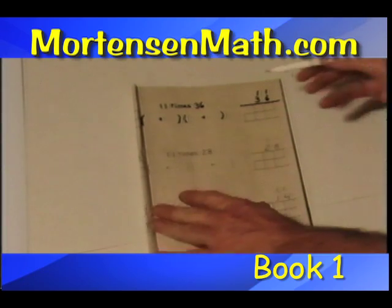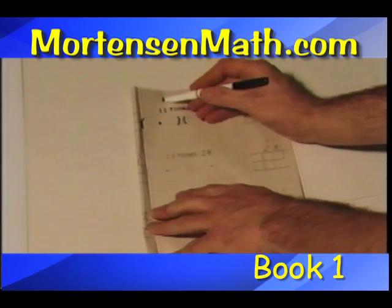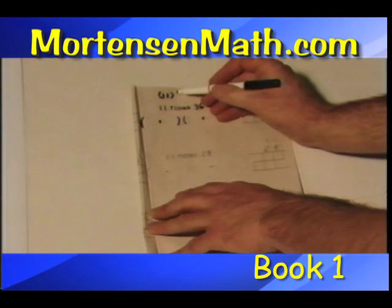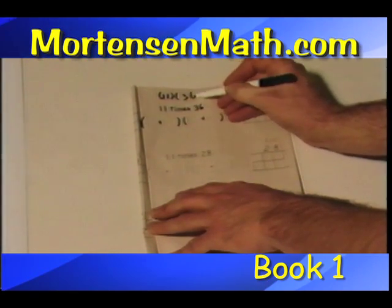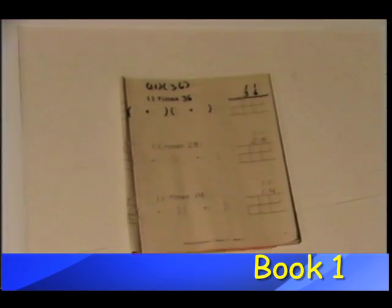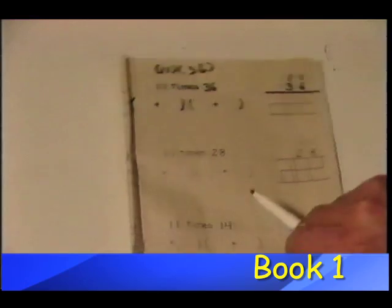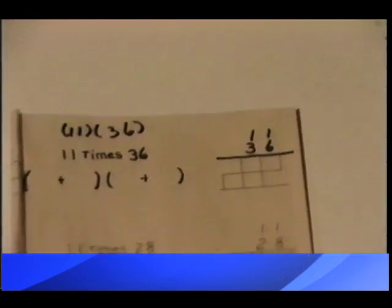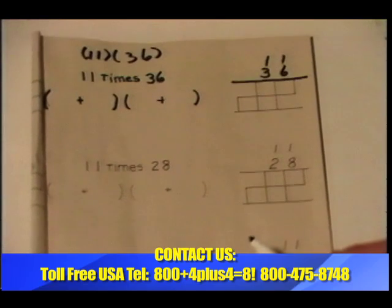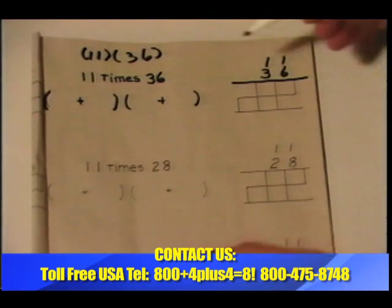The first thing we will do is write our problem as factors, short end, 11 over 36 up. Let's look at that. 11 over 36 up.